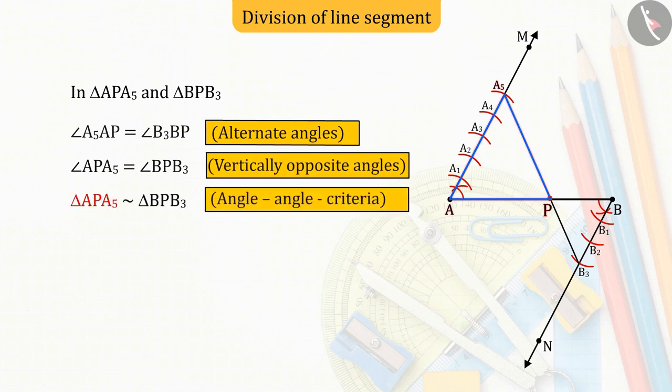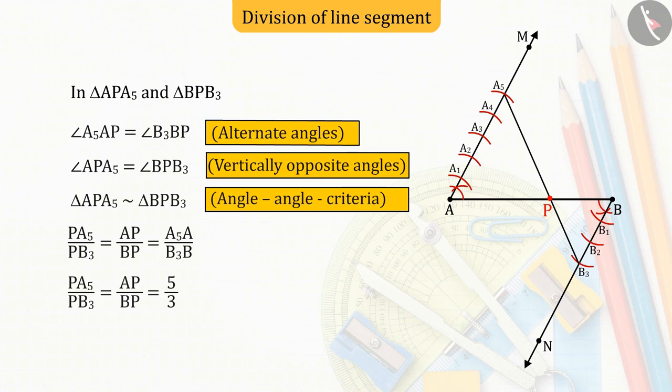So, from AA criteria, triangles APA5 and BPB3 will be similar, and we know that the corresponding sides of similar triangles are mutually proportional, from which we get the ratio of AP to PB as 5:3.